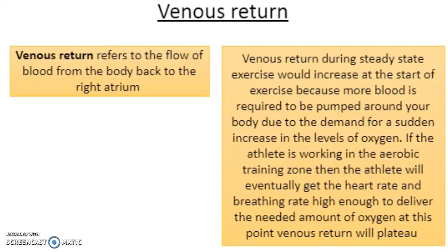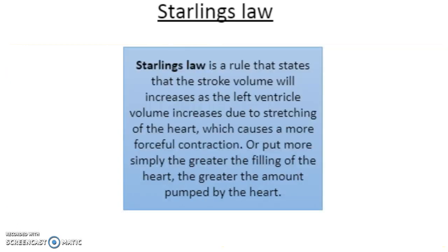Venous return refers to the flow of blood from the body back to the right atrium. Venous return during steady state exercise will increase at the start of exercise because more blood is required to be pumped around the body due to the sudden increased demand for oxygen. If the athlete is working in the aerobic training zone, they will eventually get heart rate and breathing rate high enough to deliver the needed oxygen, at which point venous return will plateau. Starling's Law states that stroke volume will increase as the left ventricle volume increases due to the stretching of the heart, which causes a more forceful contraction — or more simply, the greater the filling of the heart, the greater the amount pumped by the heart.